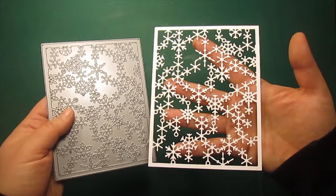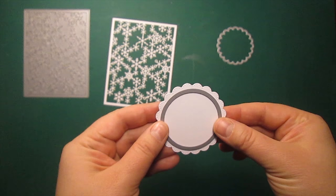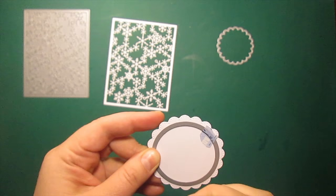To begin with I've die-cut snowflake lattice frame by Poppy Stamps out of white cardstock. I will also need a scalloped circle and a matching plain circle die to create a scalloped frame.